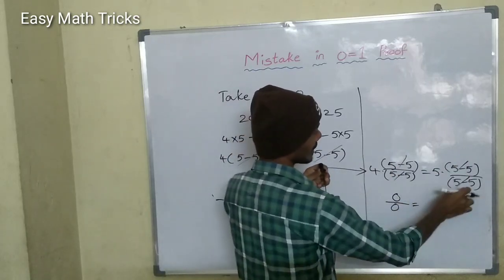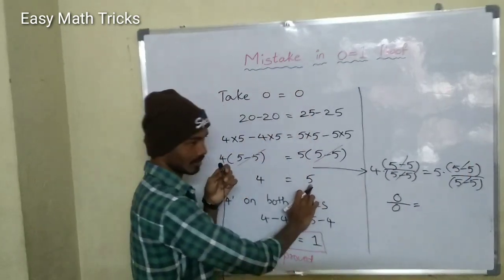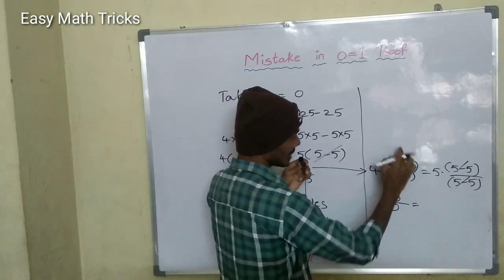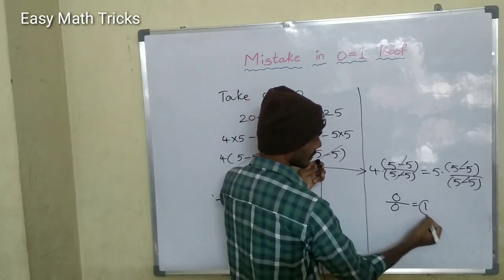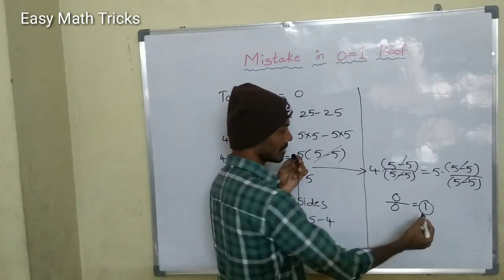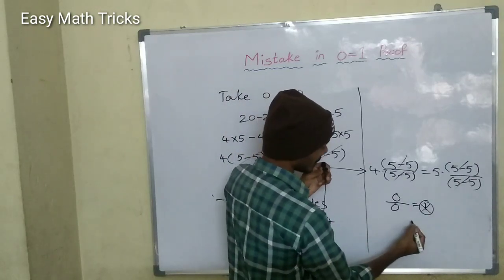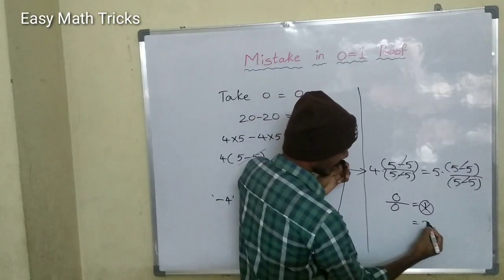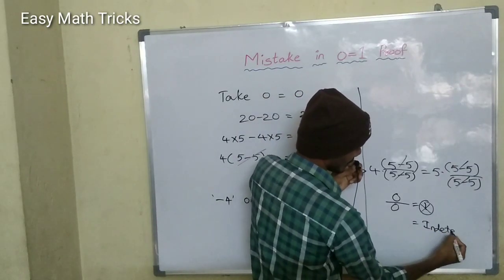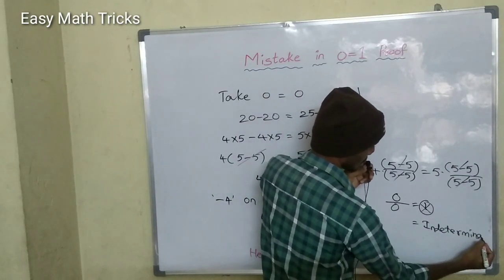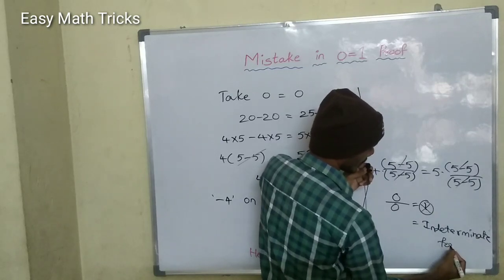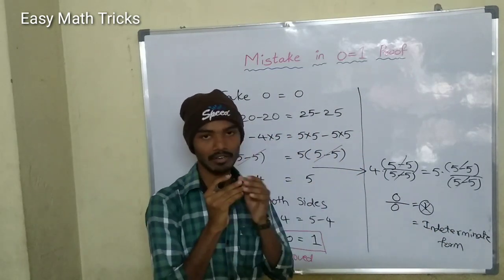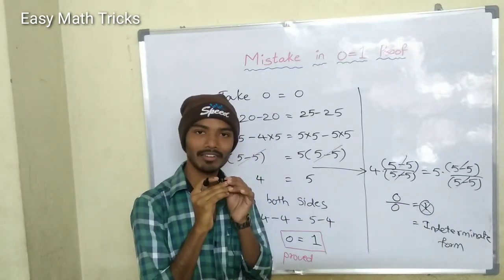4 is equal to 4. If we cancel one again, 5 is equal to 5. The name our mathematicians give it is 0 by 0 — indeterminate form. We call it 0 by 0, indeterminate form. This is how we call it: 0 by 0, indeterminate form.